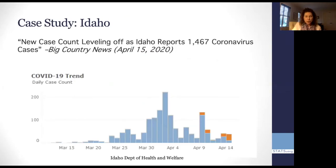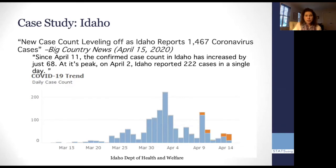Here's Idaho. New case count leveling off as Idaho reports 1467 coronavirus cases. And specifically, since April 11, the confirmed case count has increased by just 66 at its peak on April 2nd. Idaho reported 222 cases in a single day. And we can see that peak right here. April 2nd, here's the peak, 222 cases.